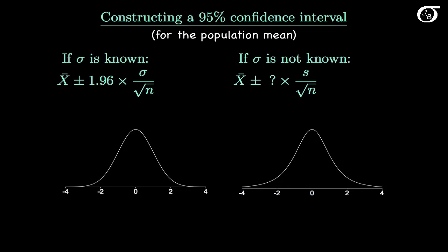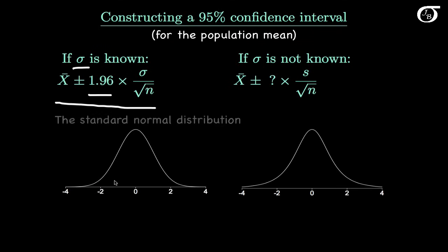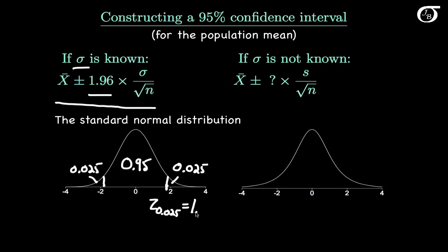This has some implications for us in statistical inference. Here I'm going to look at constructing a 95% confidence interval. If we are sampling from a normally distributed population and we happen to know the value of σ, this is the appropriate formula. This 1.96 comes from the standard normal distribution — we put an area of 0.95 in the middle, divide the remaining 0.05 evenly into the two tails, putting 0.025 in each tail. The value with an area to the right of 0.025 is z sub 0.025, which equals 1.96.